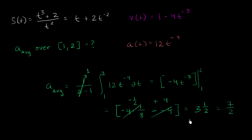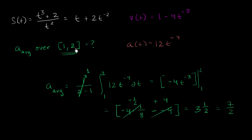So the average value of our acceleration over this interval is 7 halves. If the position was given in meters and time was in seconds, then this would be 7 halves meters per second squared — that is the average acceleration between time at 1 second and time at 2 seconds.